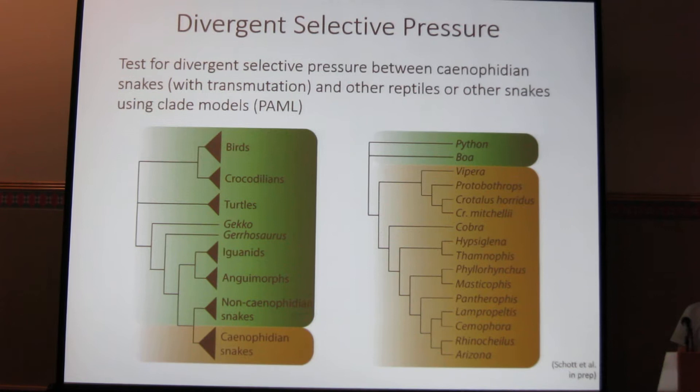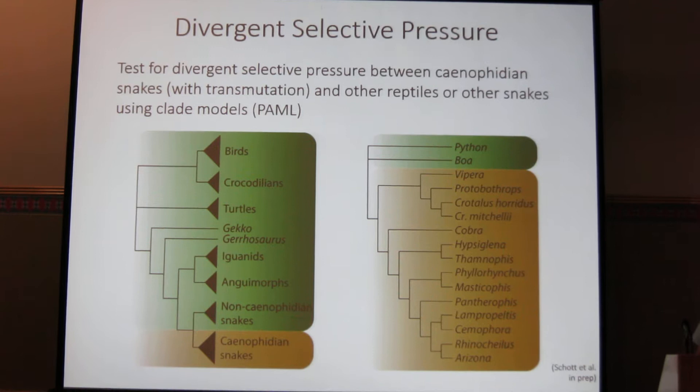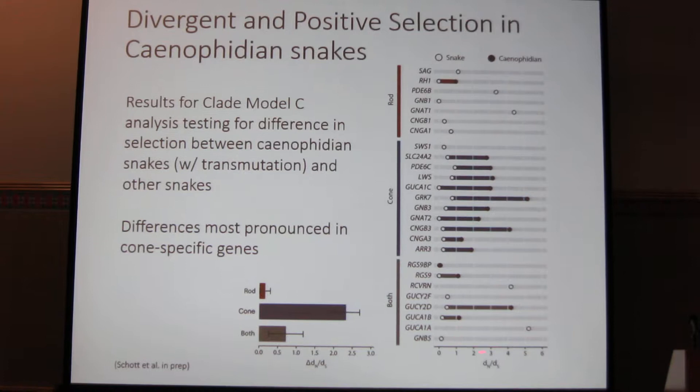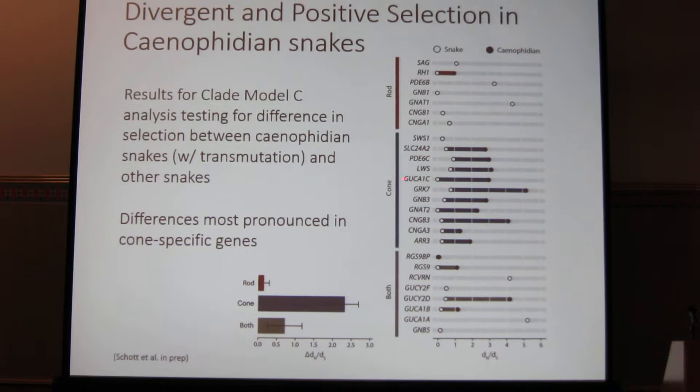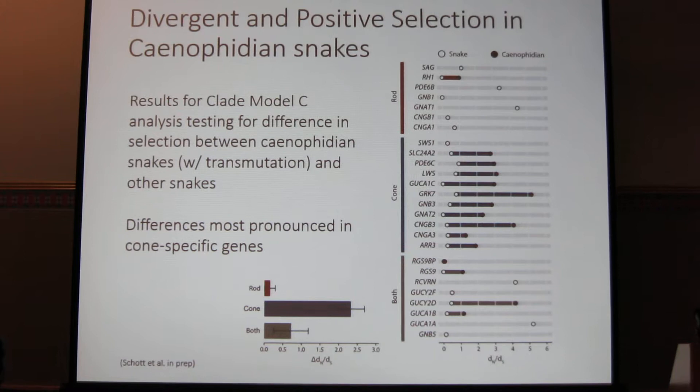To test for this, we used a clade-based approach where we compared the Caenophidian snakes that have transmutation with other reptiles, and also just Caenophidian snakes to other snakes, using clade-based models in HyPhy. When we look at the results for the snake versus Caenophidian comparison, on the bottom we have the dN/dS omega values — a measure of the divergence of selection, with longer bars indicating more divergent selection. We see good support for most genes, not much support in rods, and a lot of support in cones, with a much higher level of divergent selection as well as positive selection in the cone-specific genes.